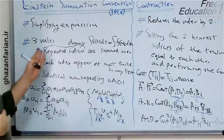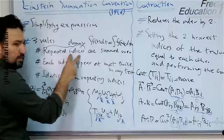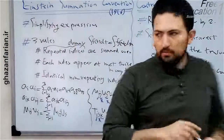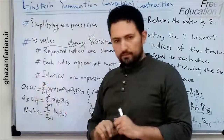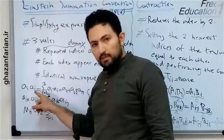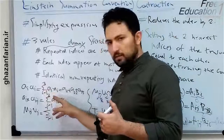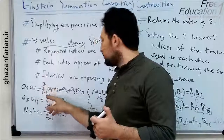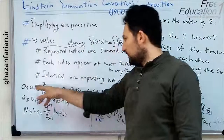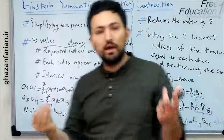So when we use index notation or tensor notation, the repeated indices are summed over that repeating variable. For example, when I have a_i times a_i — a product of two similar vectors — since the indices are identical, this can be expanded using the summation symbol. This is equal to the summation of a_i times a_i from i equals one to three in three-dimensional space. Expanding this gives: a_1·a_1 + a_2·a_2 + a_3·a_3. This is the summation rule of Einstein.